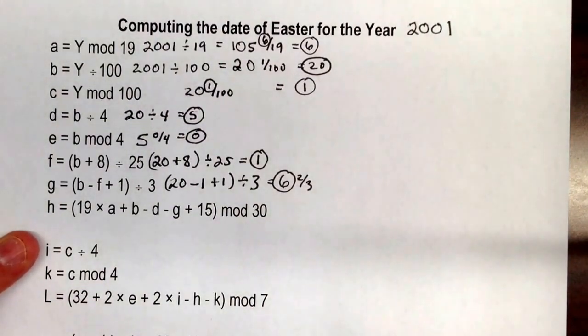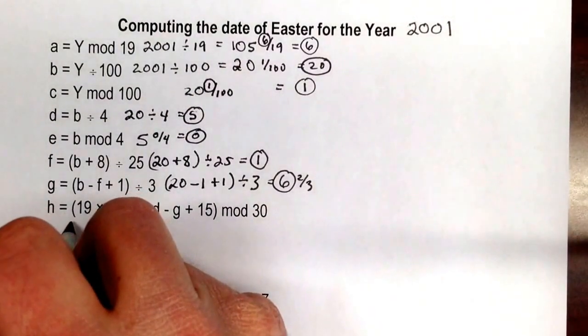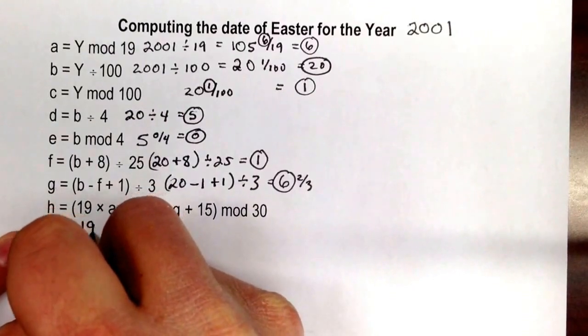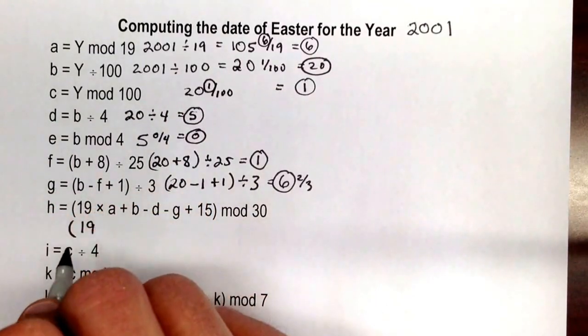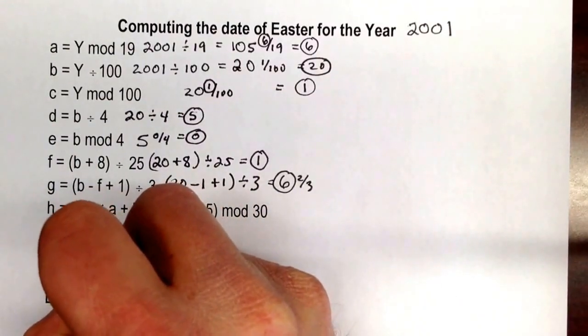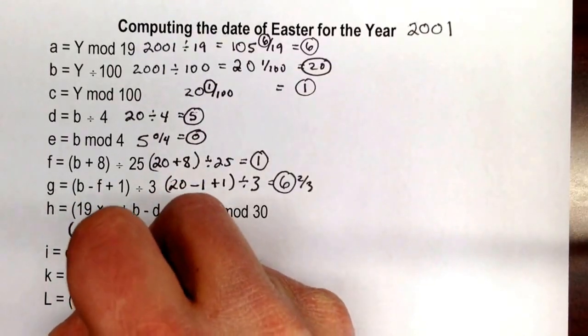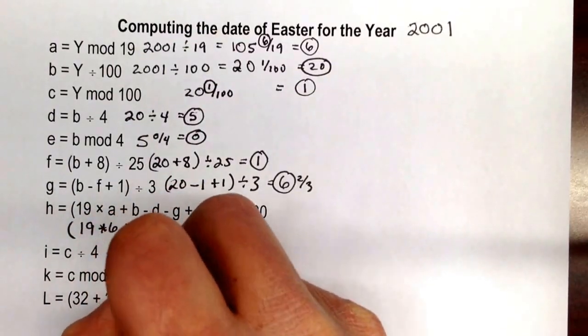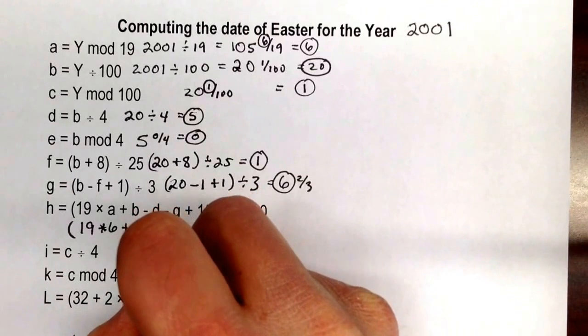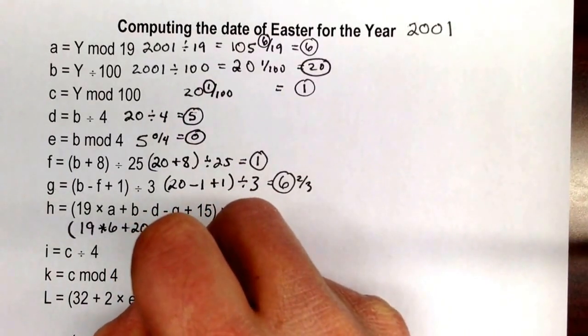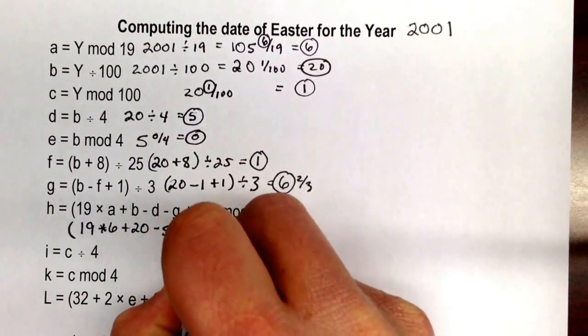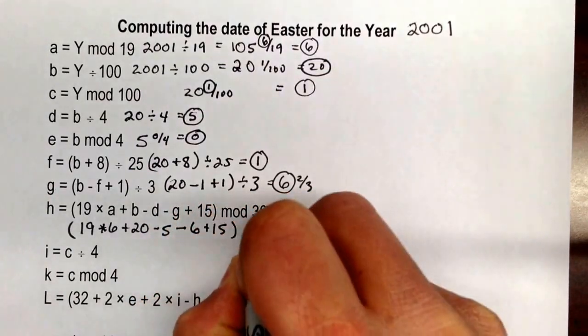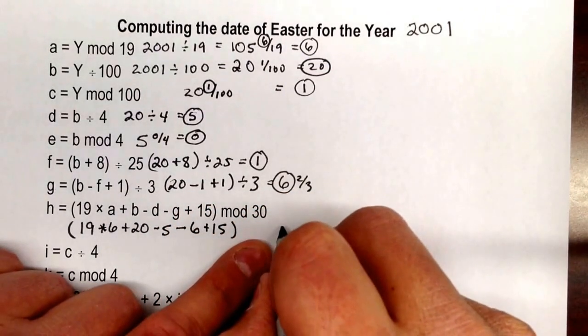Next we're going to do h. h is going to be kind of a big one, so that's why I have a separate line here for it. 19 times, and go ahead and fill these in as you go. 6 plus b is 20, minus 5 is d, minus 6 is g, plus 15. And then we're going to take that and we're going to mod that 30, which means we're going to figure out the remainder when we divide by 30.